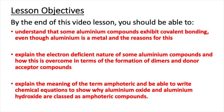You should also be able to explain the electron-deficient nature of some aluminium compounds and how this is overcome in terms of the formation of dimers and donor-acceptor compounds. And finally, you should be able to explain the meaning of the term amphoteric and be able to write chemical equations to show why aluminium oxide and aluminium hydroxide are classed as amphoteric compounds.